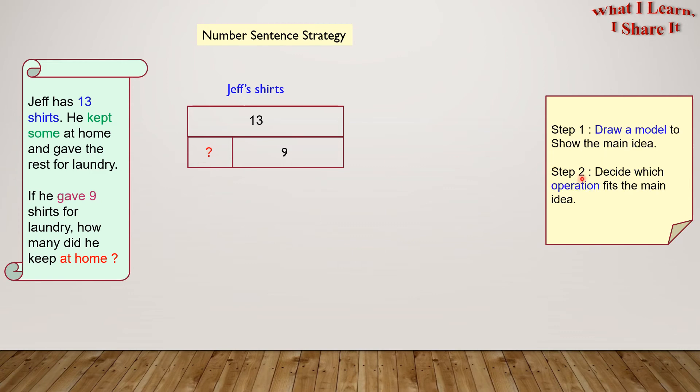Step 2. Decide which operation fits the main idea. Which operation will we use? Of course, since the question mark is a part of the 13 shirts Jeff has, we will use subtraction.